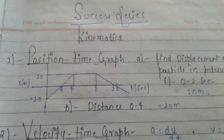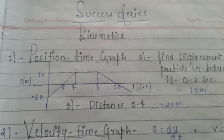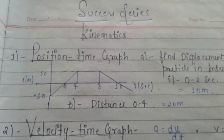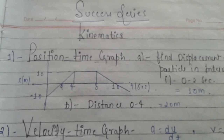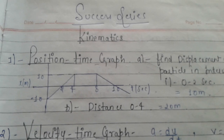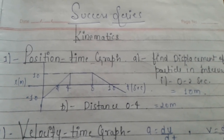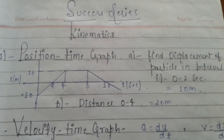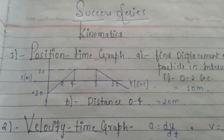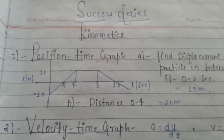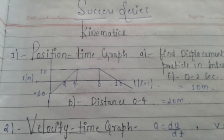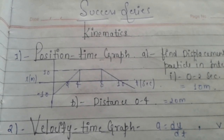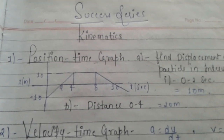Hello everyone, our next topic is kinematics. In this video I will give a short description of the kinematics chapter. Firstly, I will tell you the differences between distance and displacement. Distance is the actual path traveled by any body during its whole journey, while displacement is the difference of final minus initial position.